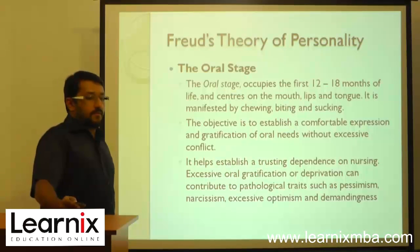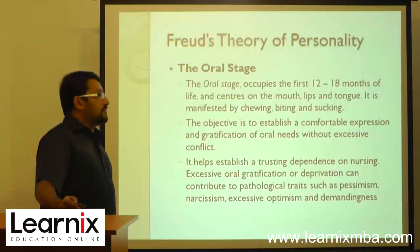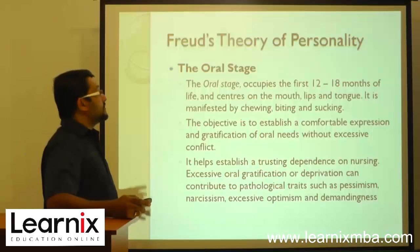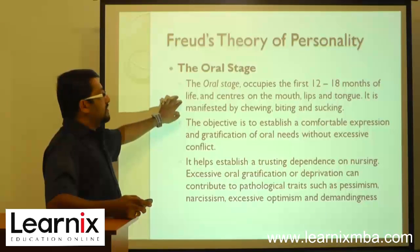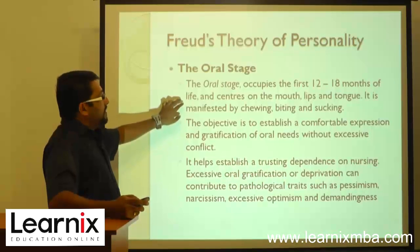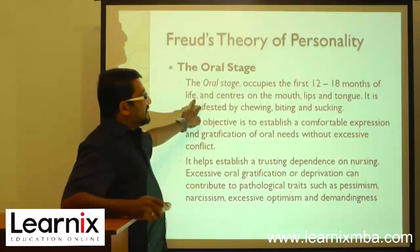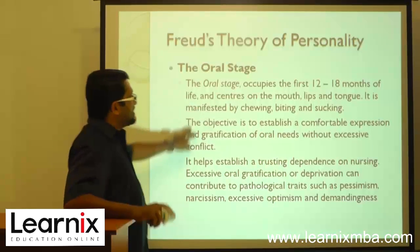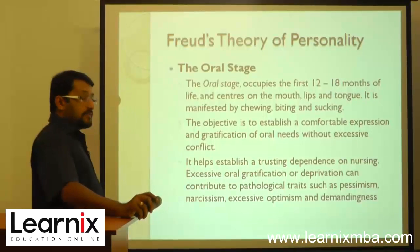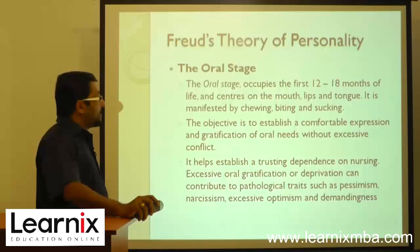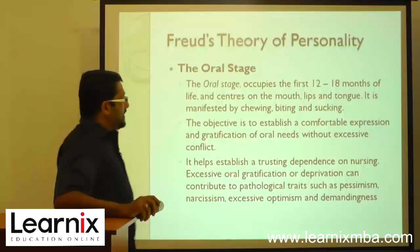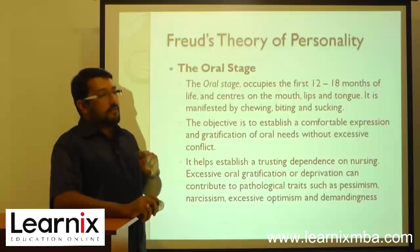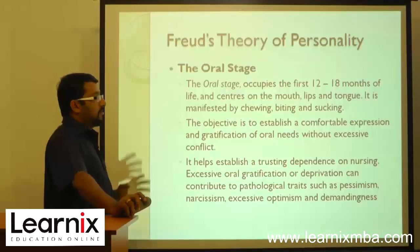Let's start Freud's theory of personality in detail. There are five stages, the first one being the oral stage. The oral stage occupies the first 12 to 18 months of life and centers on the mouth, lips, and tongue. It is manifested by chewing, biting, and sucking.